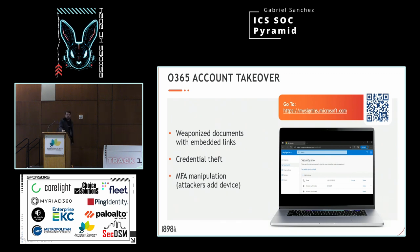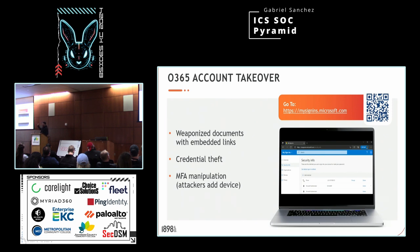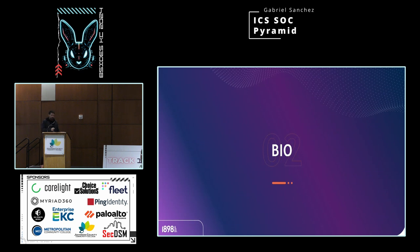An incident response team going into critical sector organizations would check this on an assumed breach and suddenly see additional iPhones not belonging to the user — that's a problem. Safety moment: if you're using O365, go to mysignins.microsoft.com and make sure only your phone is listed for 2FA, not additional devices you're unaware of. And the QR code on screen — I recommend nobody scan it, because that's also not safe.